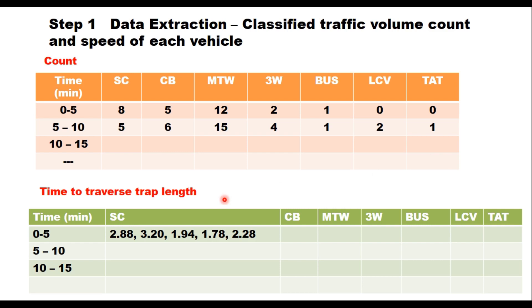Next is to find out the speed of individual vehicle which are covered in this 5 minute interval. So if you have, let's say 8 cars, find out the time taken by each car to traverse the length of the trap and note down time here.